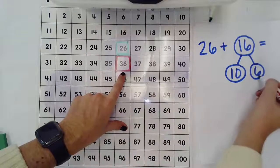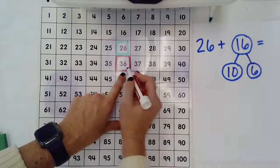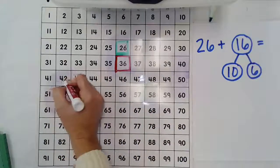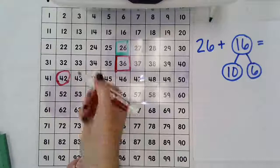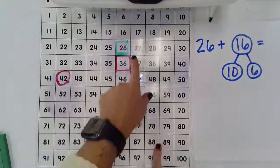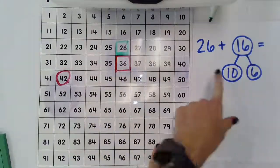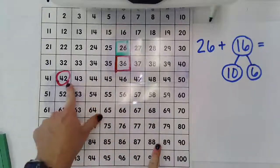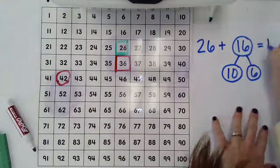And from there I'm just going to count up six ones: one, two, three, four, five, six. So by using my hundreds chart and breaking apart 16, I just had to add 10 and then add 6 to get 42.